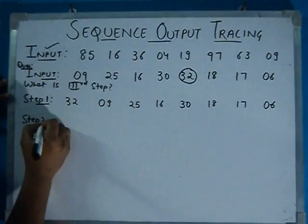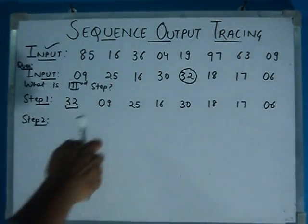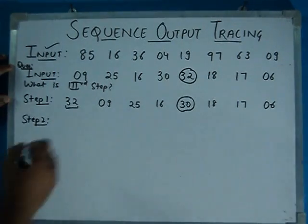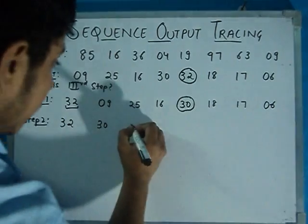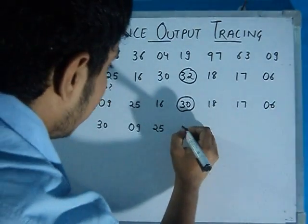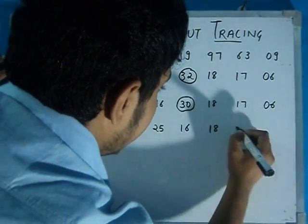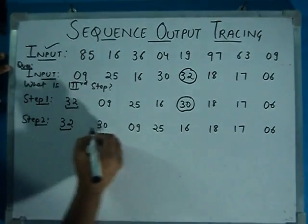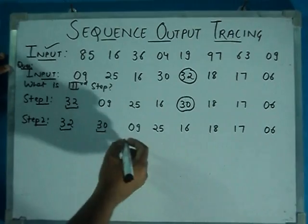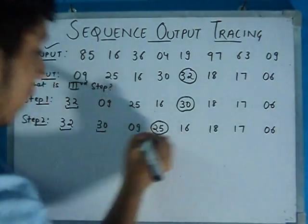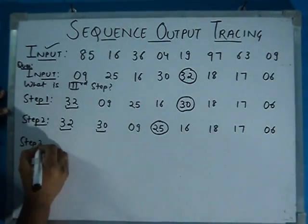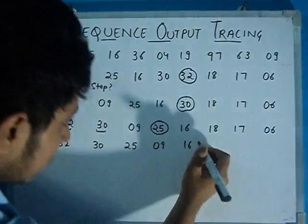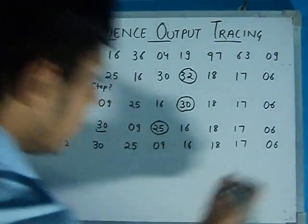Step 1 is complete. I book the first place. Now I search for the biggest number in the remaining numbers, which is 30. So step 2 is: 32, 30, and the remaining numbers shift forward. Now for step 3, I search for the next biggest number, which is 25. So step 3 is: 32, 30, 25, 09, 16, 18, 17, and 06. This is my third step and that is the answer if the question asks for step 3.